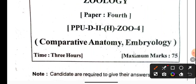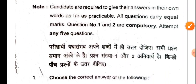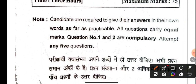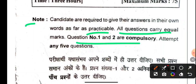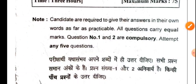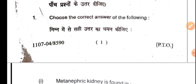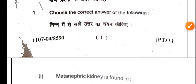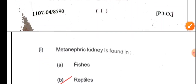This was Paper 4, which was comprehensive, covering the topics of comparative anatomy and embryology. We have to see the instructions given: candidates are required to give their answers in their own words as far as practicable; all questions carry equal marks; question numbers one and two are compulsory. Question number one is objective and question two is short notes.